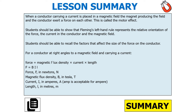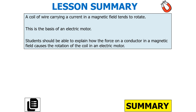In summary: when a conductor carrying a current is placed in a magnetic field, the magnet and the conductor exert a force on each other — we call this the motor effect. You should be able to use Fleming's left-hand rule to represent the relative orientation of force, current, and the magnetic field, and recall the factors that affect the size of the force on a conductor. For a conductor at right angles to a magnetic field and carrying a current, force equals magnetic flux density times current times length — where force is in newtons, magnetic flux density in teslas, current in amps, and length in metres. A coil of wire carrying a current in a magnetic field tends to rotate, which is the basis of an electrical motor.